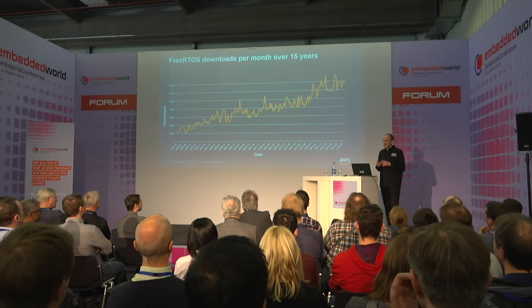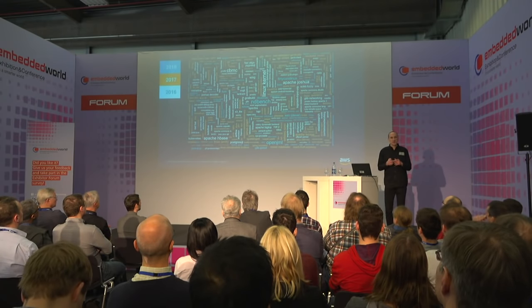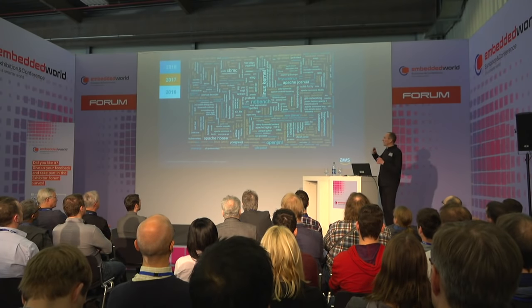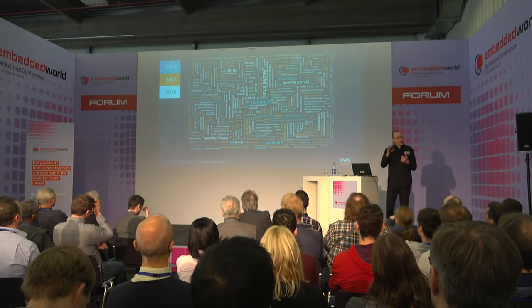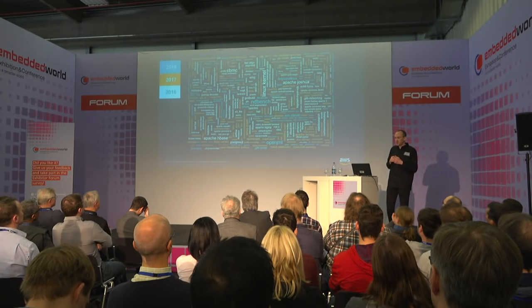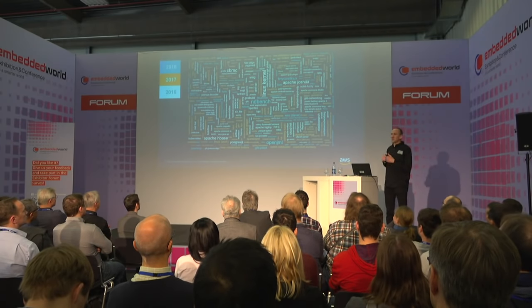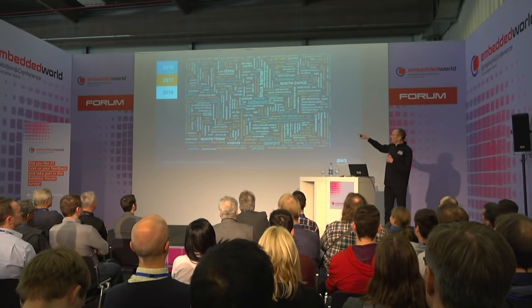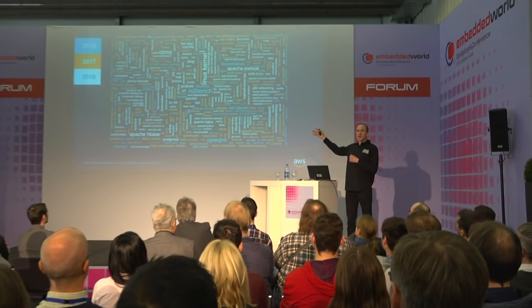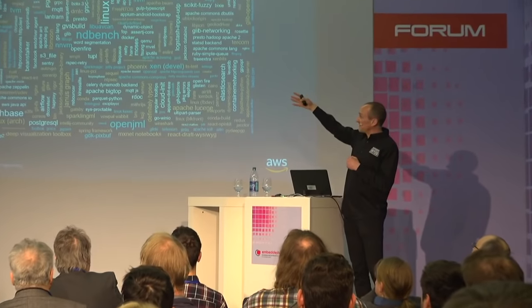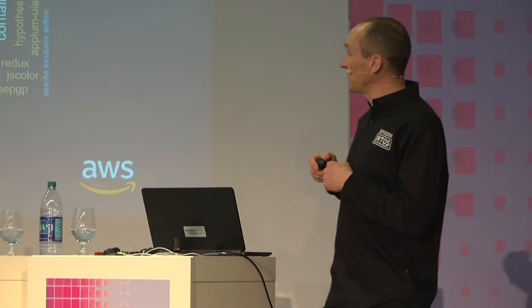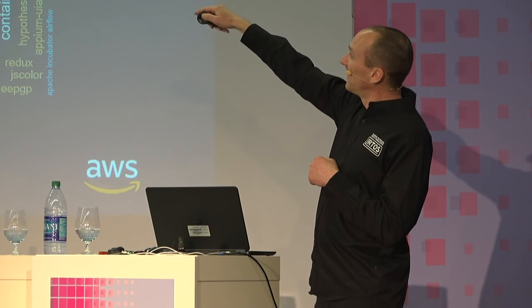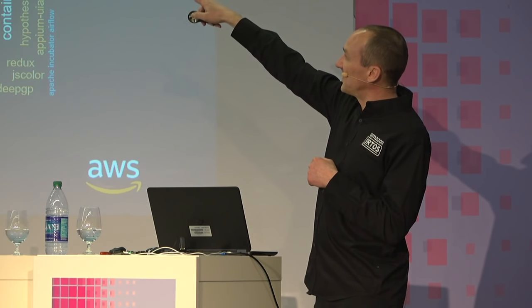So where does this fit into the work that Amazon does in open source? On this graphic, color coded by year, these are all the open source projects that Amazon have contributed to over 2016, 2017, and 2018. And if we look carefully, on the next slide I think I highlighted there, you'll find FreeRTOS.